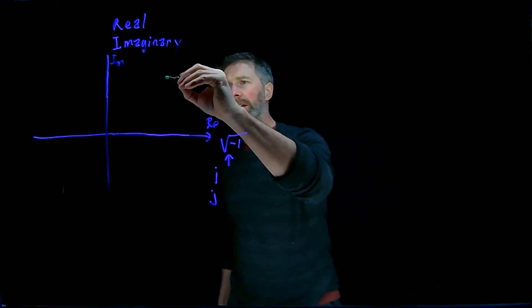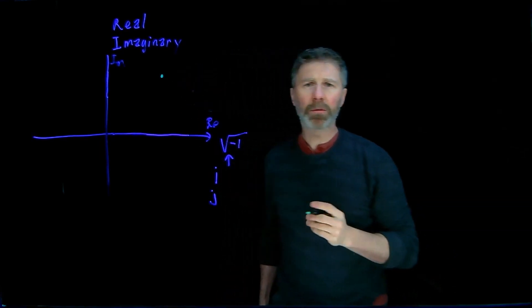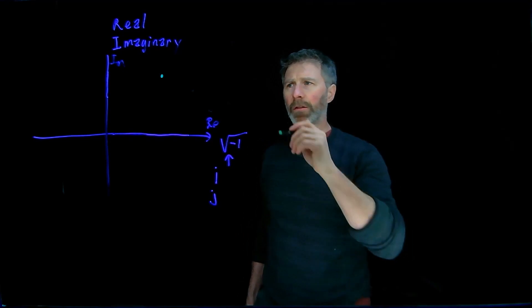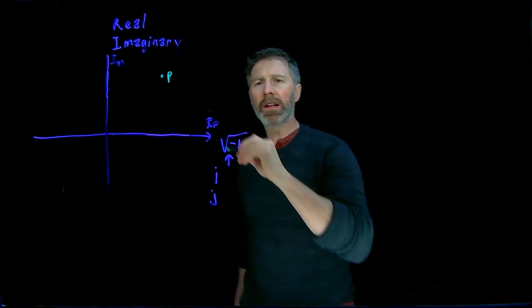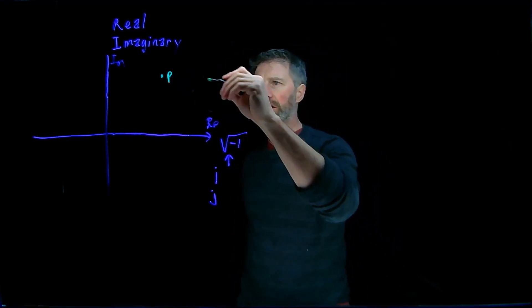Now any point in this plane can be represented in a couple of different ways. The first way, let's just call this point P, is by using the coordinates, the Cartesian coordinates.